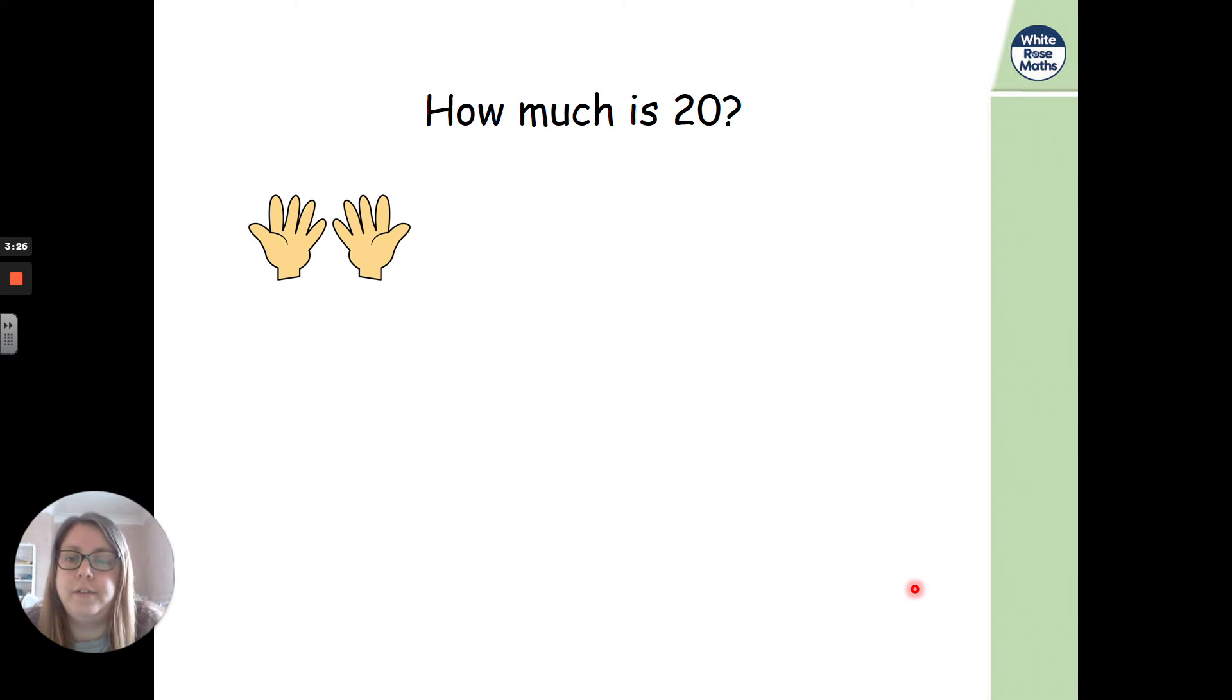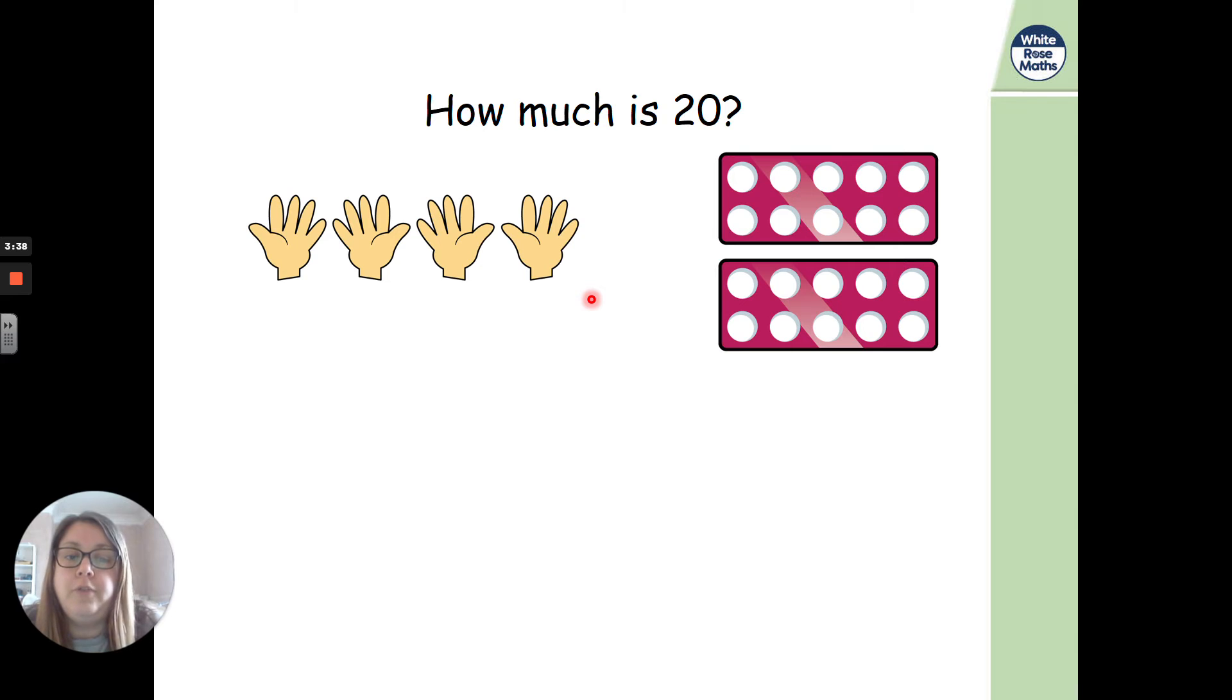So how much is 20? Here we go. We've got it in five, haven't we? We can do it with our fingers. So we've got five, 10, 15, 20. And we can count in fives because we know how to do that. We could represent it with our numicon. Here we go. So we could represent it with our hands. So we've got two lots of hands, haven't we? 10 and 10 makes 20. 10 and 10 makes 20 with our numicon.